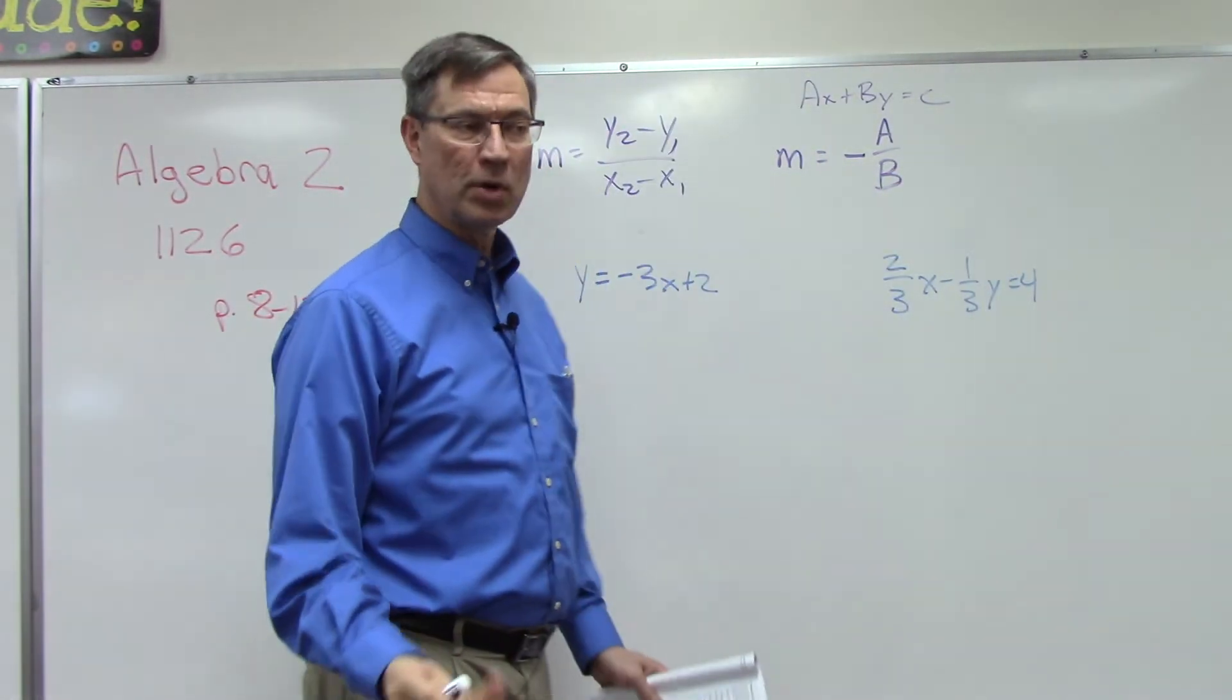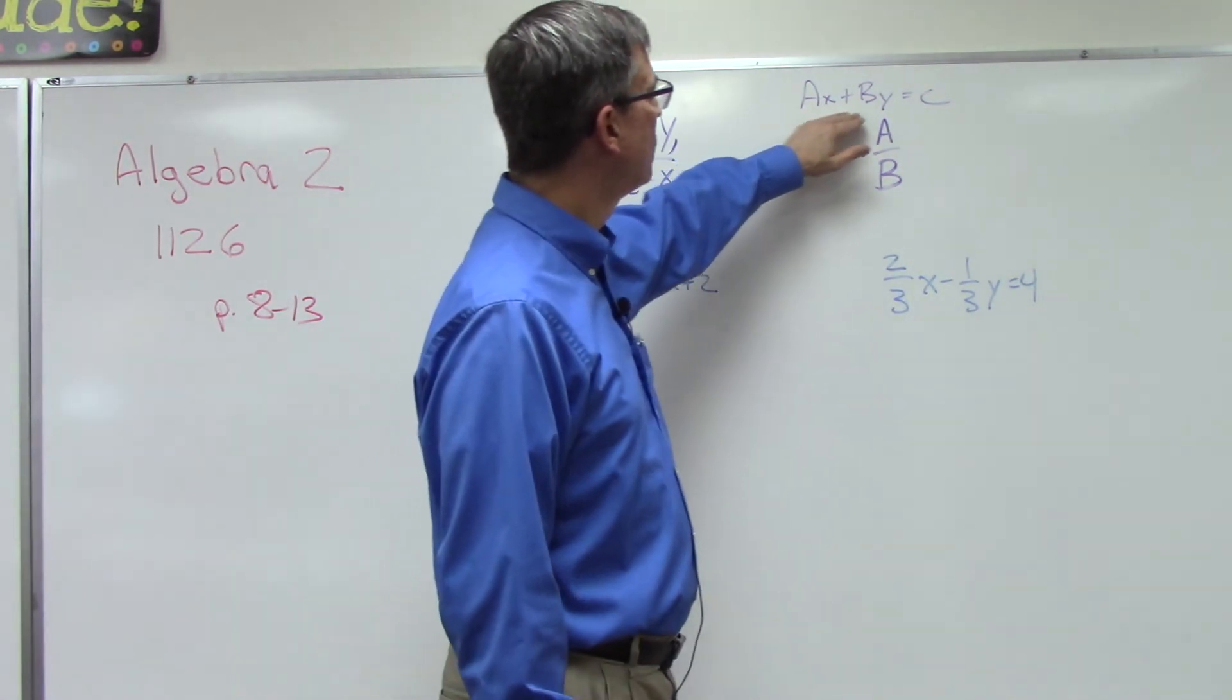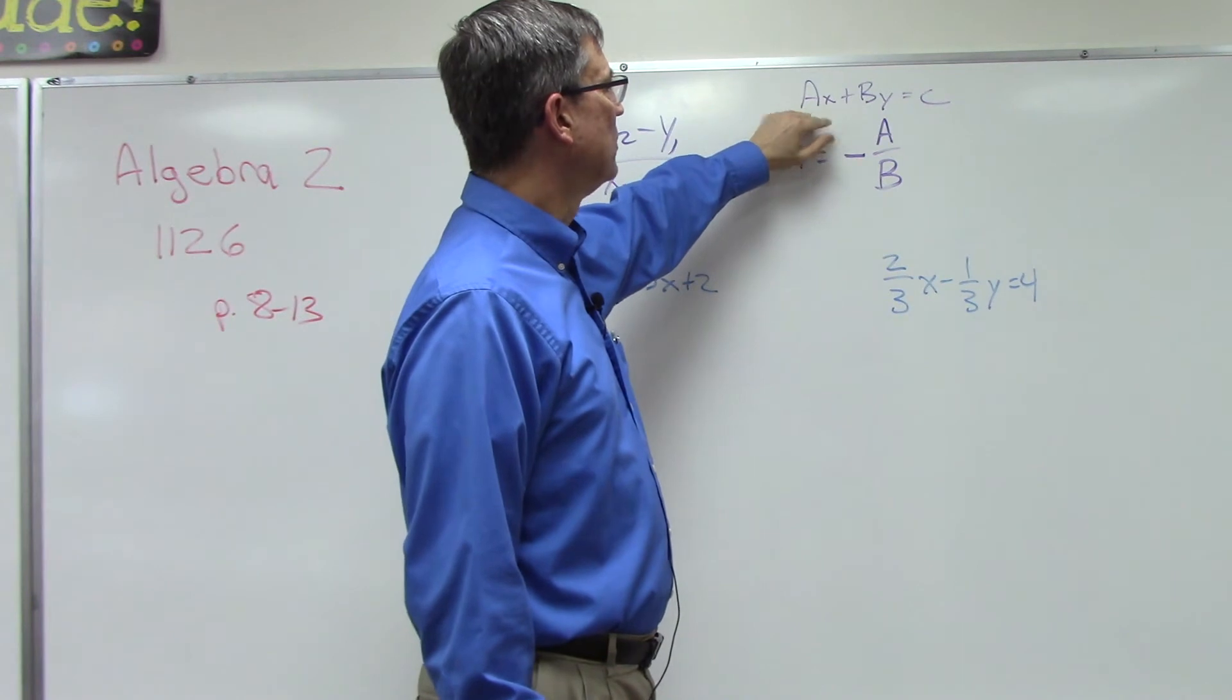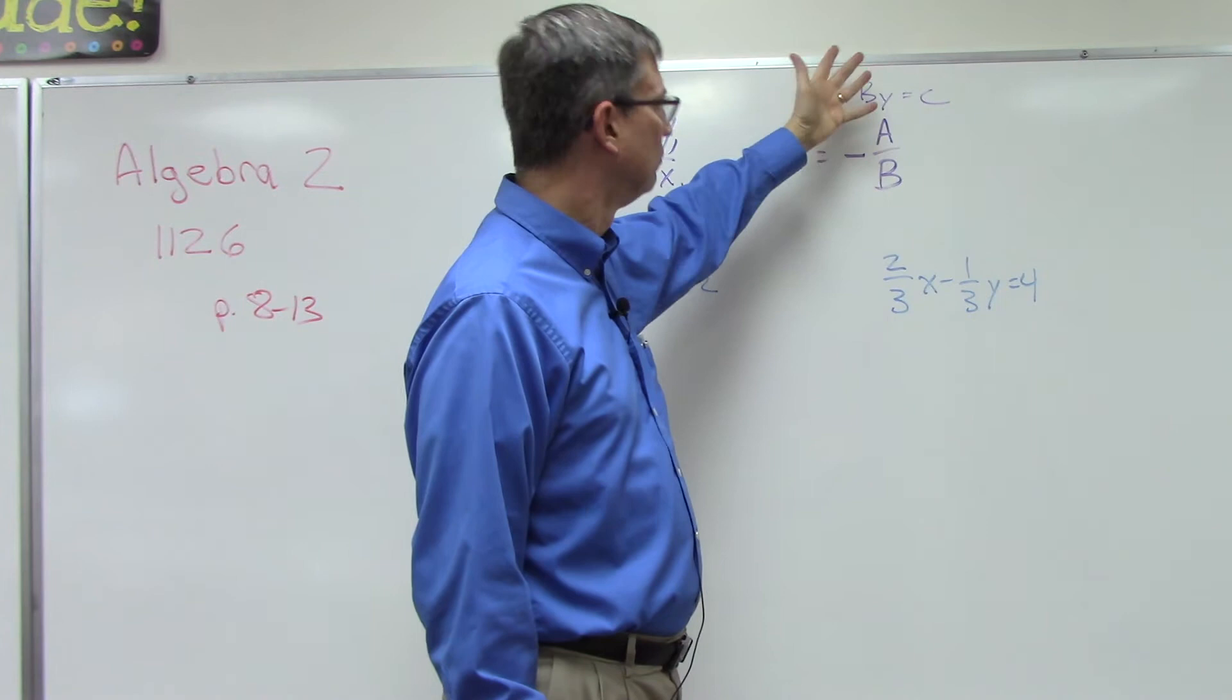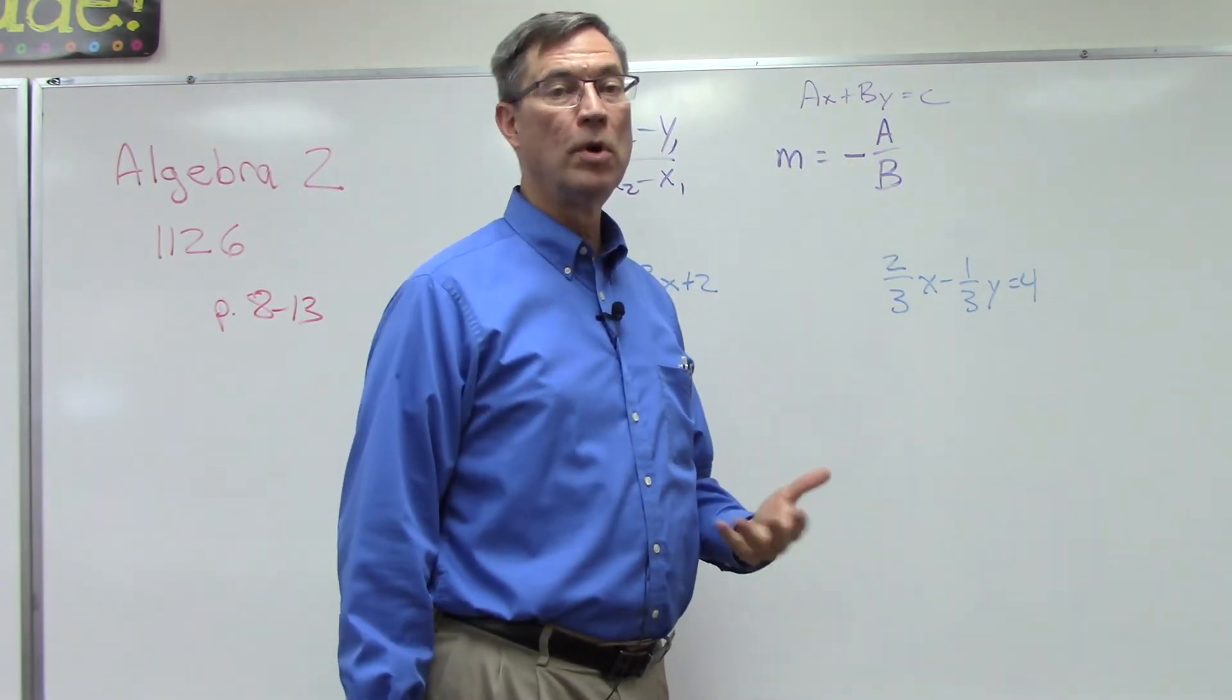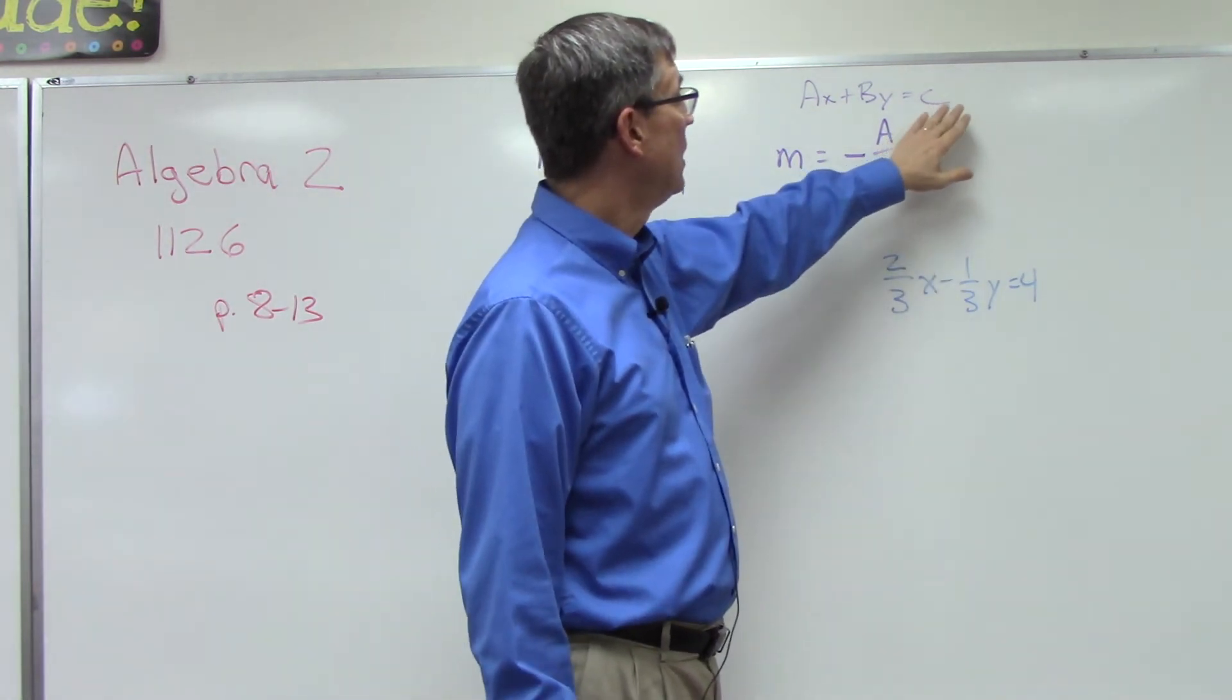Another method that it talks about here, which is actually a shortcut, it's pretty cool, it's pretty easy. You have to have the equation in this form first. Ax, in other words it could have a coefficient, some number in front of X, plus By equals C. So the A and the B would be a number or fraction, could just be one. And then if there's any other number left over, you take that to the other side, and that's C.